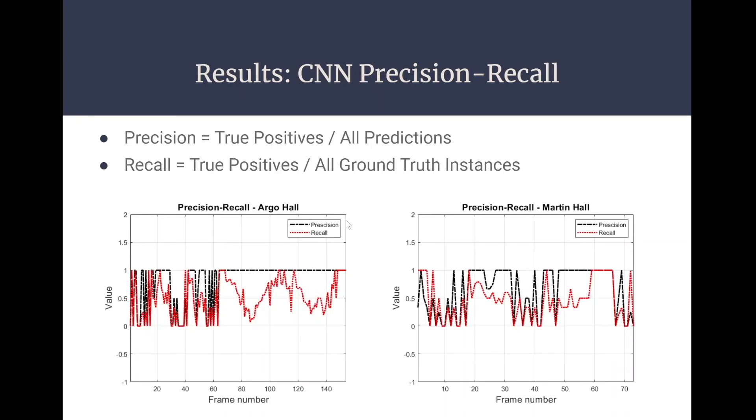And here is basically just a precision recall graph of our model. This here is the precision recall of Argo Hall and the precision recall of Martin Hall. What this basically is: precision is calculated as the number of true positives over the number of true positives and false positives. And it is the measure of how valid the predictions made by the model are. So the better the precision, the better the model. False positives reduce the precision of the model. And recall is calculated as the number of true positives over the number of true positives and false negatives.